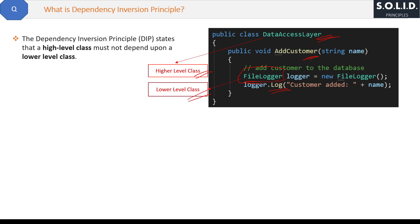The disadvantage of this is: if tomorrow you want to replace the logging technique — for example, from file logging to database logging — you have to modify inside the DataAccessLayer. The method name may be the same, but you have to use a new class. There can be multiple classes like this, and you'd have to replace FileLogger with DatabaseLogger everywhere.